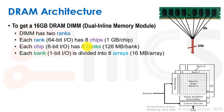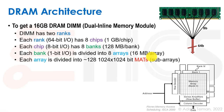Each bank is divided into eight arrays of 16 megabytes each. Each array is divided into about 128 mats, where each mat is, for example, 1024 by 1024 bits — that is 1024 rows by 1024 columns. So 128 mats make an array, eight arrays make a bank, eight banks make a chip, eight chips make a rank, and two ranks make a DIMM.